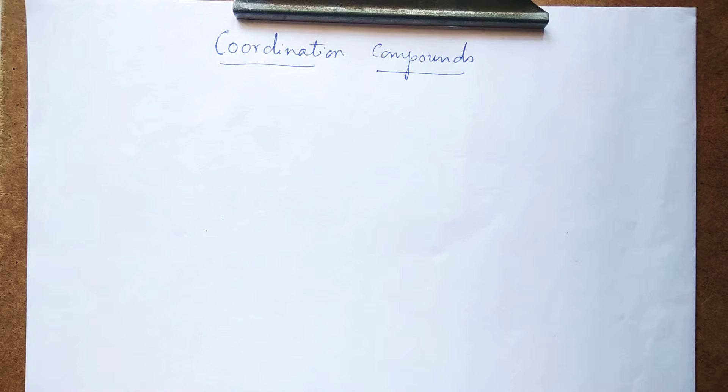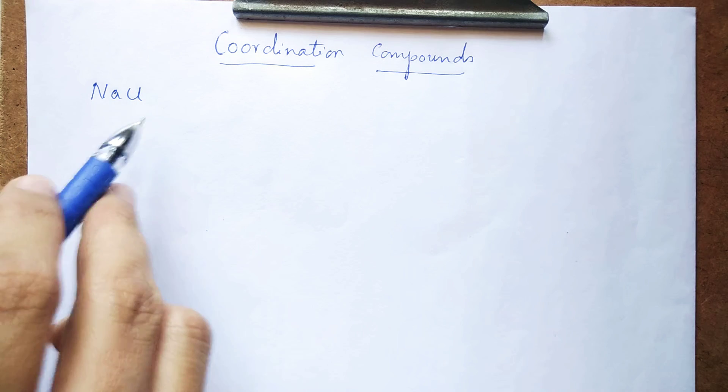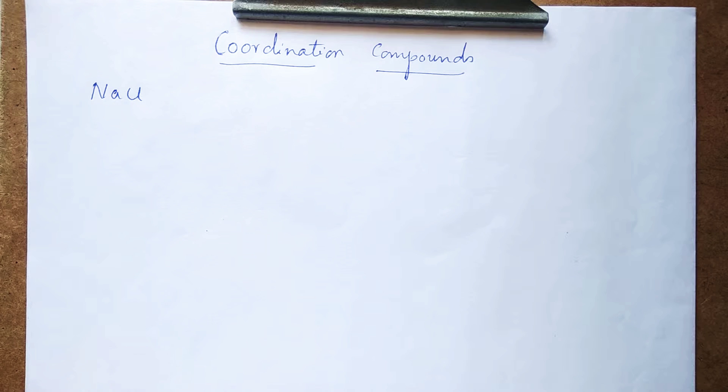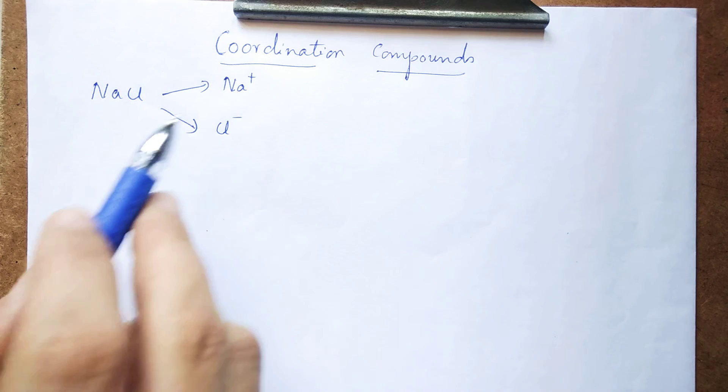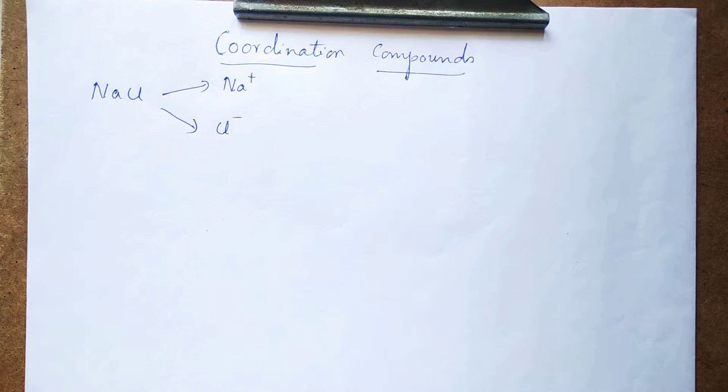Hi students, in today's video I'm going to explain coordination compounds. Here we have NaCl or your table salt, sodium chloride. It is an example for simple salt. Now if I add water into NaCl, what happens? Simple, it dissociates into Na+ ion and Cl- ion.